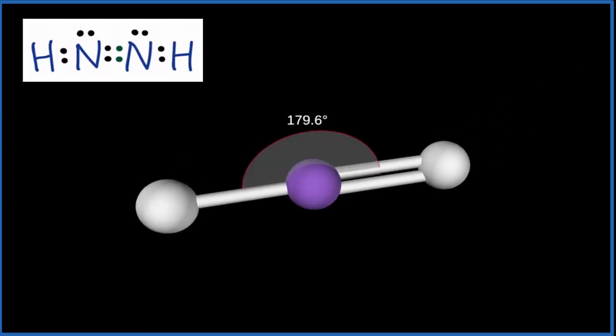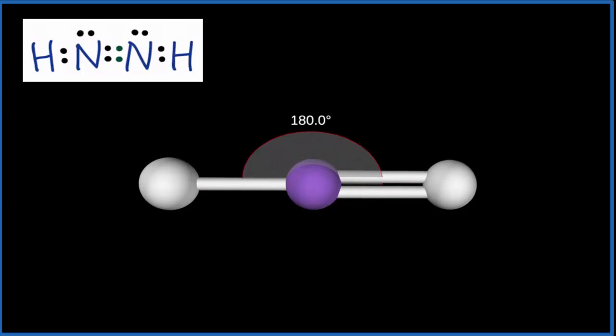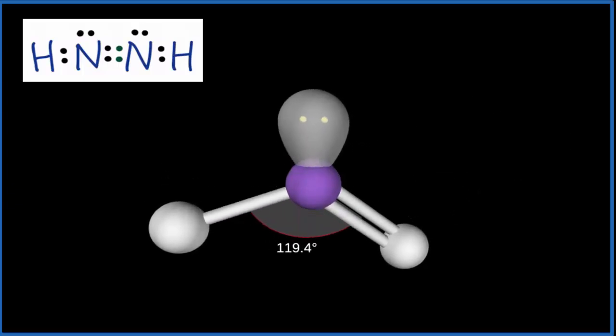So far we have this linear molecular geometry. But that lone pair that was on top of the nitrogen, we need to put that in. And when we do that you can see where this lone pair up here at the top...